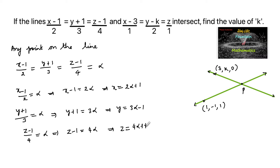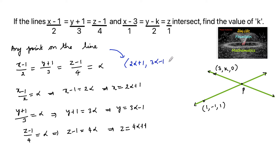So any general point on the first line can be written as (2α+1, 3α−1, 4α+1).